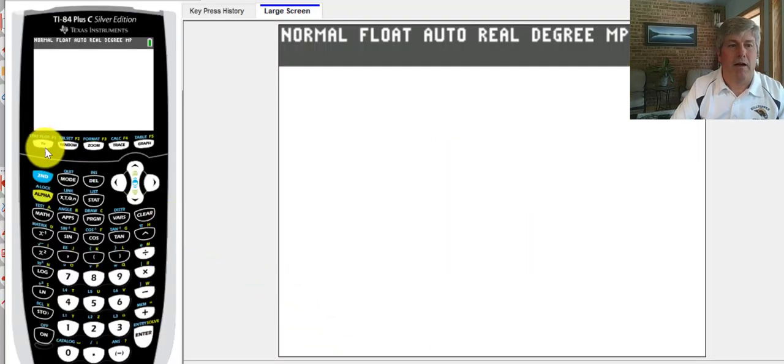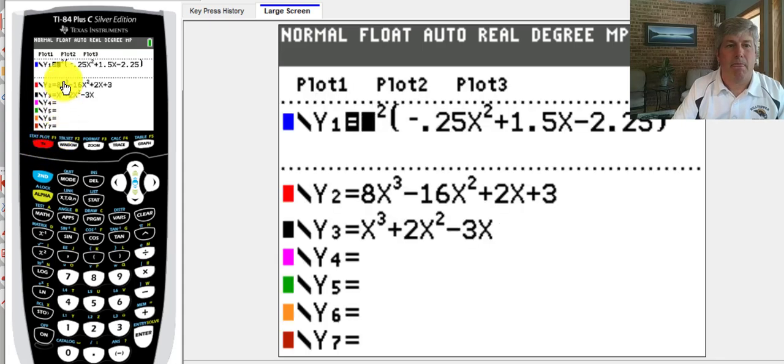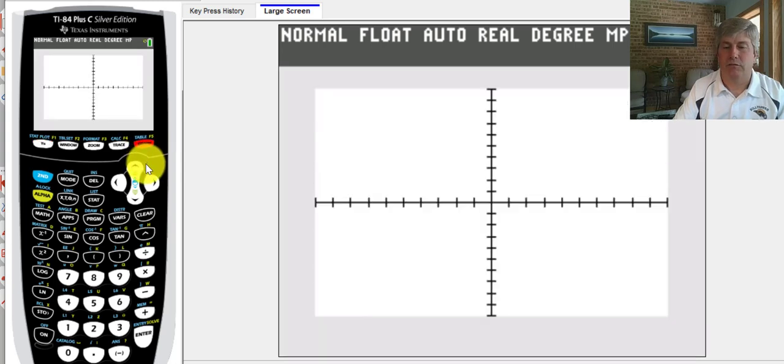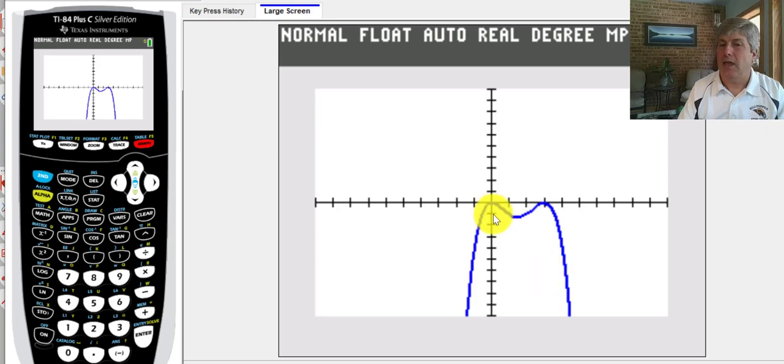So I pull up my graphing calculator and I've got my function already in there. I use decimals instead of fractions and I'm going to go ahead and graph that function. So I'm graphing the function in the standard window. And just like we said, we have a double root here at zero and it bounces. And it appears we have another double root at three.